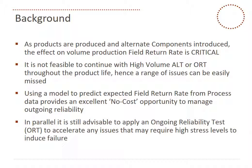The background to this is quite simple. When products are produced and things like alternate components are introduced as normal in mass production — cost reduction, etc. — the effect on volume production field return rate is pretty critical. It's obviously clear that if any mistakes are made and data is not available and we take a risk decision, that can be critical. It's not feasible to always continue with high-volume accelerated life tests or even ongoing reliability testing throughout the product lifetime. Hence, a range of issues can be easily missed.